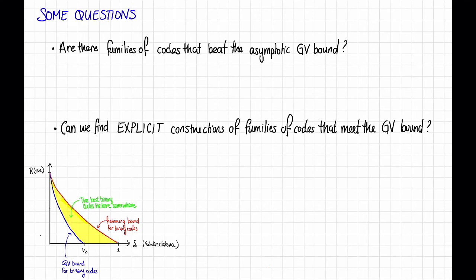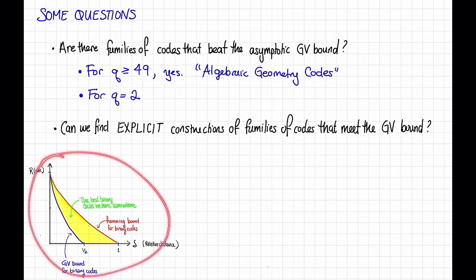Well, the answer is yes and no. So on the positive side, for alphabet size q ≥ 49, the answer is yes. It is known that particular families of codes called algebraic geometry codes do beat the GV bound. On the other hand, for q = 2, that's what this picture is for. Sorry if I didn't say that before.